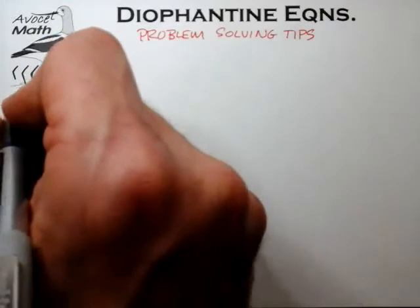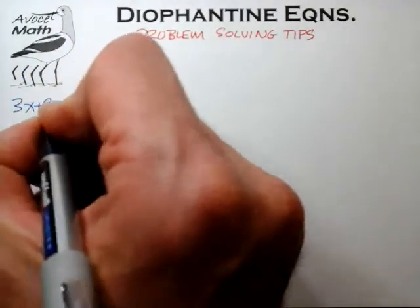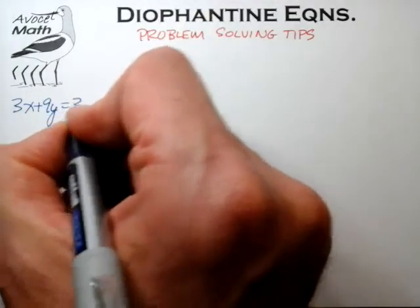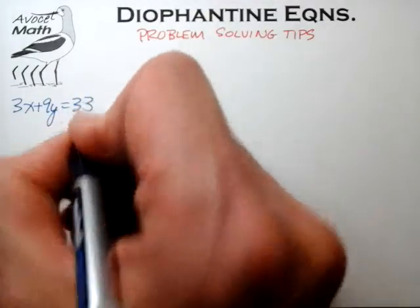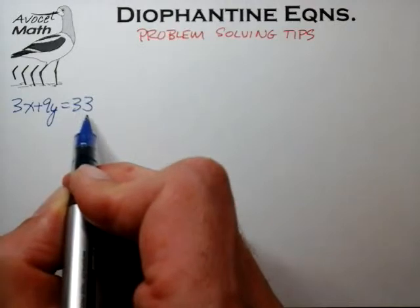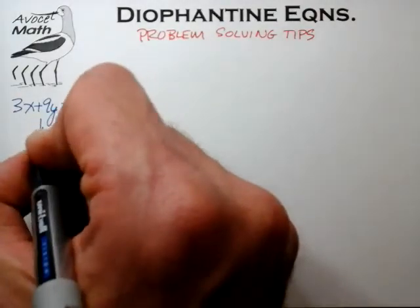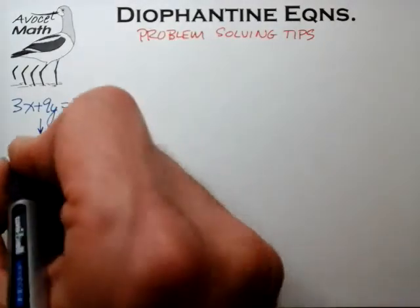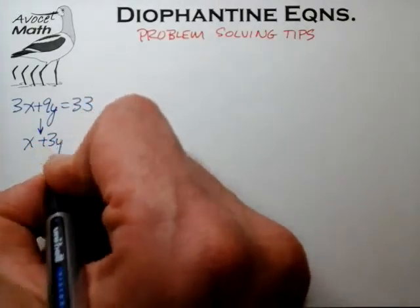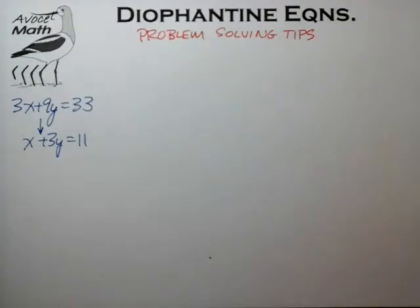The first tip relates to Diophantine equations where the coefficients of x and y share a common divisor, and that common divisor also divides into the constant term — in this case, example 33. Your intuition is, in fact, correct: you do want to divide out by that common divisor of three to leave yourself with a somewhat simpler Diophantine equation.